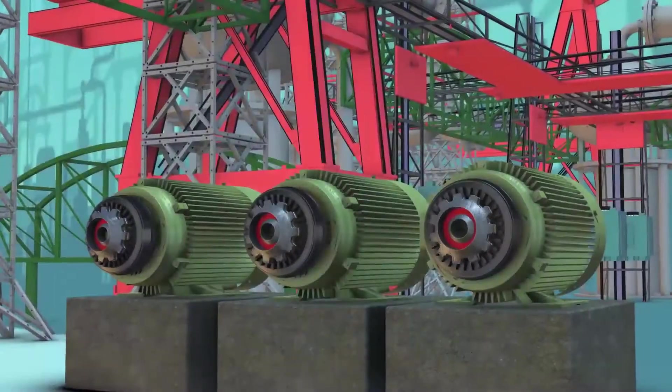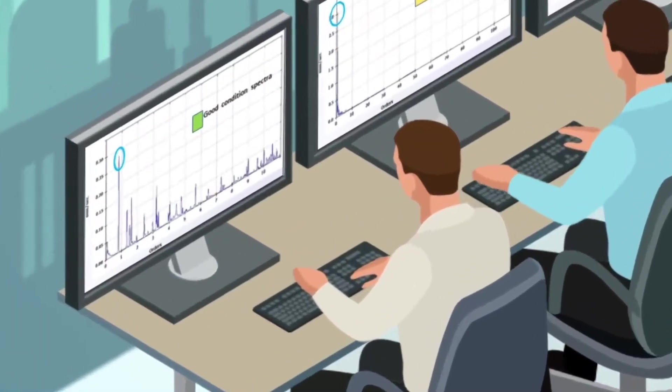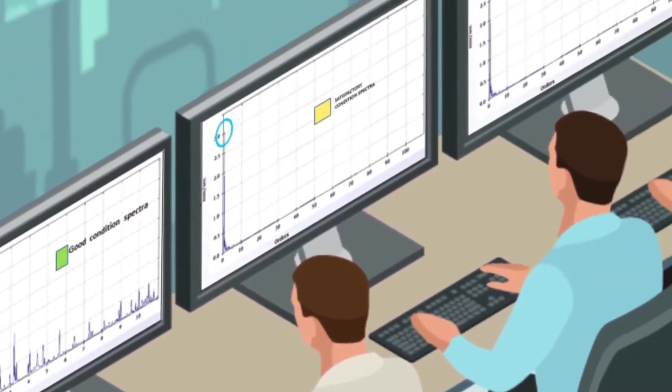The moment your equipment throws out the slightest glitch, the plant operators are alerted. These glitches provide operators alerts on machine failures long before they occur.